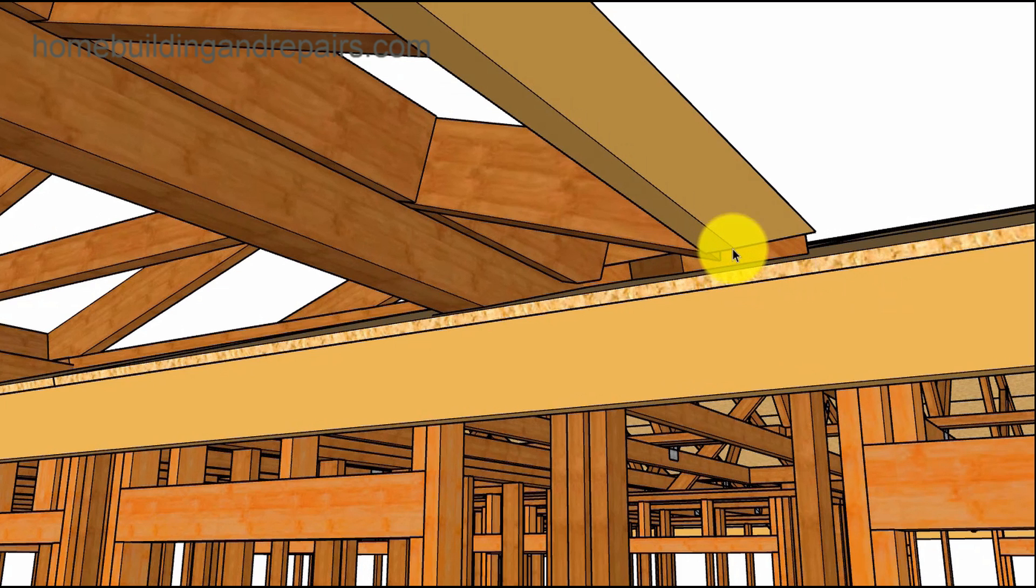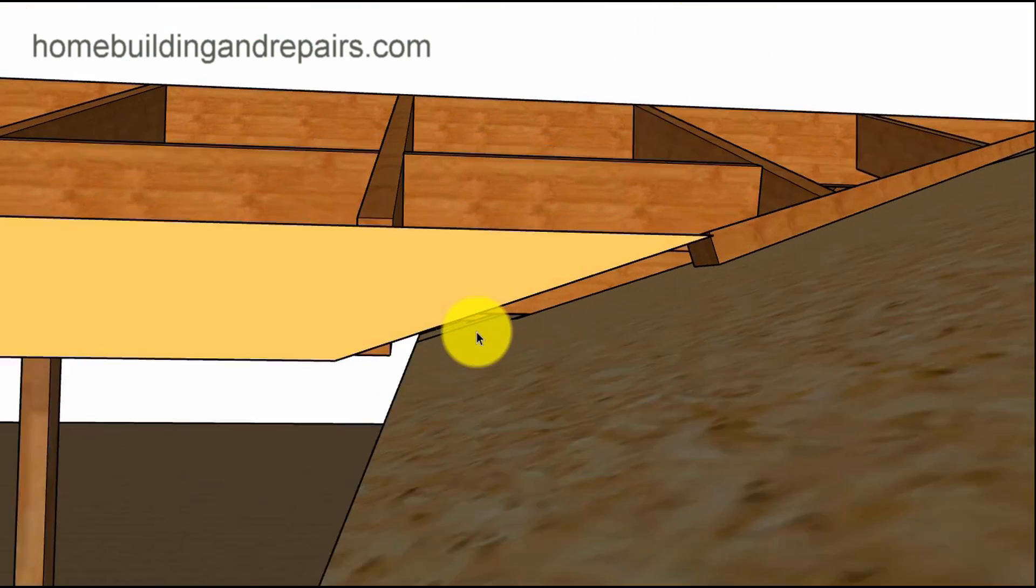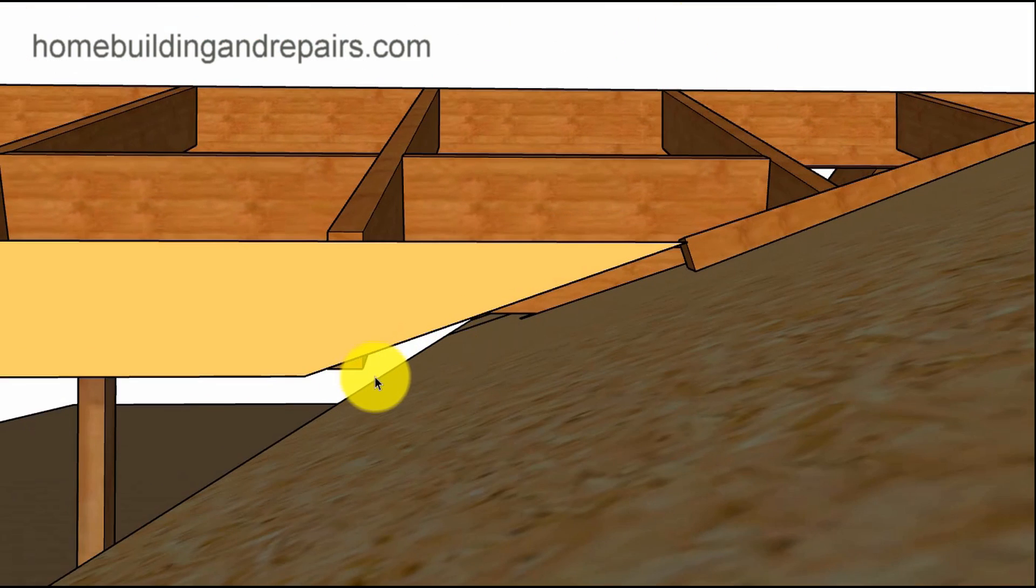This is usually an inch to an inch and a half. This space here is so that you can run your roofing materials under it. So you might not need as much room for composition shingles, maybe you only need a half inch. For tile you might need two or three inches. That will all depend upon the roof.